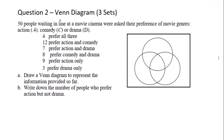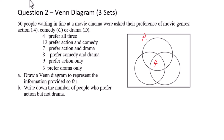Question 2: 50 people waiting in line at a movie cinema were asked their preference of movie genres — action, comedy, or drama. For part a, draw a Venn diagram to represent the information. 4 prefer all three. Let's label the sets: A for action, C for comedy, D for drama.